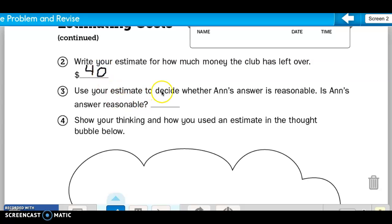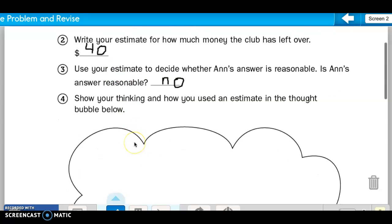And use your estimate to decide whether Ann's answer is reasonable. Is her answer reasonable? And we said it is not close. So it is not reasonable. So we are going to write, no, it is not reasonable. Because the estimate is very far away from her answer. So it is not reasonable. So these are what you should have put.